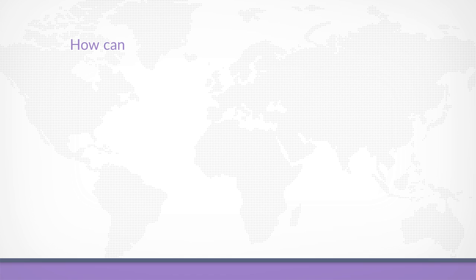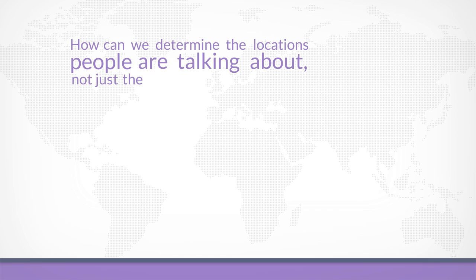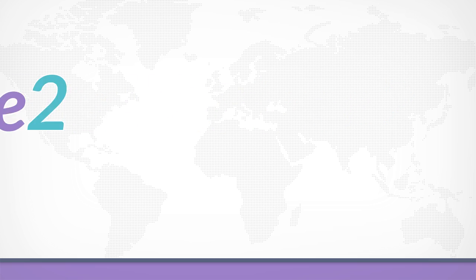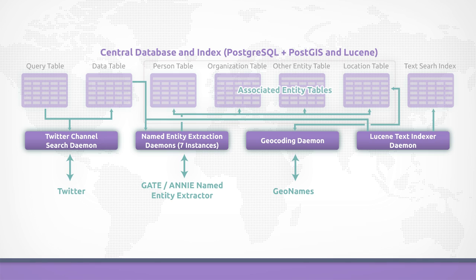And more importantly, how can we determine the locations people are talking about, not just the locations they're tweeting from? To do this, we've created a tool called SensePlace2. SensePlace2 works by analyzing tweets to identify topics and locations mentioned in the text. We use sophisticated entity extraction and geolocation algorithms to map the places mentioned in each tweet, pairing mentioned locations with both a tweet and a timestamp.